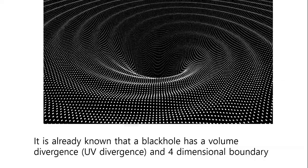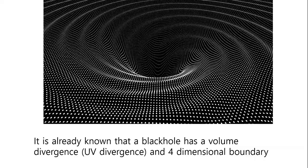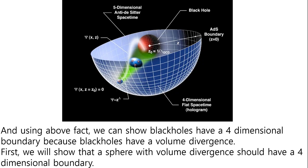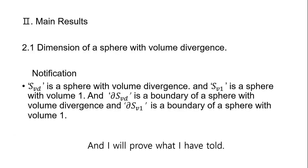It is already known that the black hole has a volume divergence and a 4-dimensional boundary. Using this fact, we can show black holes have a 4-dimensional boundary because black holes have volume divergence. First, we will show that the sphere with volume divergence should have a 4-dimensional boundary, and I will prove what I have told.